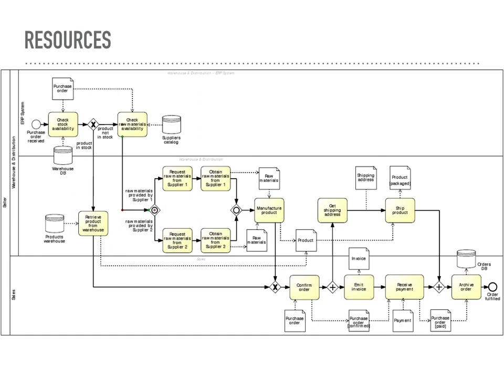Pools are depicted as rectangular containers with solid lines that surround the entire process or sub-process they contain, and are often labeled with the name of their corresponding entity. Lanes are used to categorize and differentiate activities within a pool. They represent roles, departments, or responsibilities within an organization that contribute to the process. Lanes are depicted as vertical or horizontal swim lanes within a pool, dividing it into sections. Each lane typically represents a specific role, department, or participant — for example, within a sales department pool, one might have lanes for the sales team, marketing team, and customer service. Lanes help visually organize activities and show how responsibilities are distributed among participants.